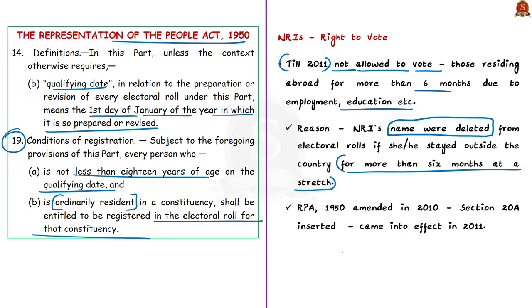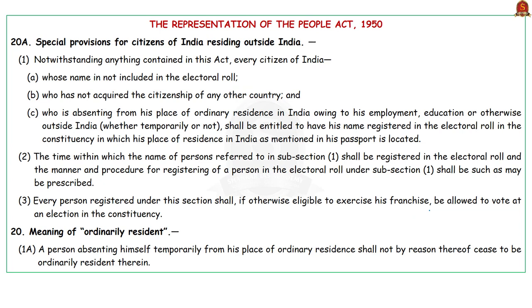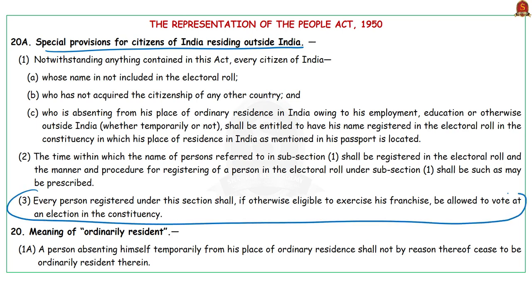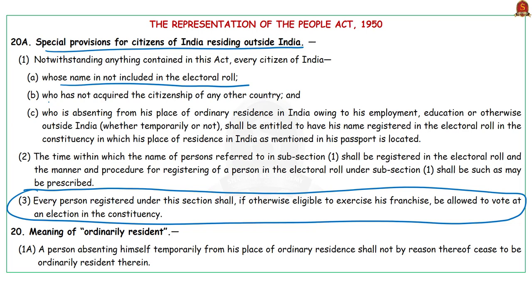In the year 2010, the Representation of People Act 1950 was amended to insert Section 20A, which came into effect in 2011. This section provides a special provision dealing with citizens of India residing outside India — including non-resident Indians — who are eligible to vote under sub-section 3 of Section 20A, if they fulfill three conditions: their name is not included in the electoral roll; they have not acquired citizenship of any other country; and they are absent from their place of ordinary residence in India because of employment, education, or other valid reasons.